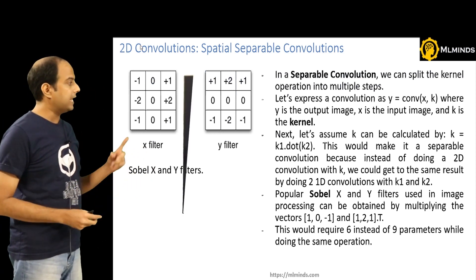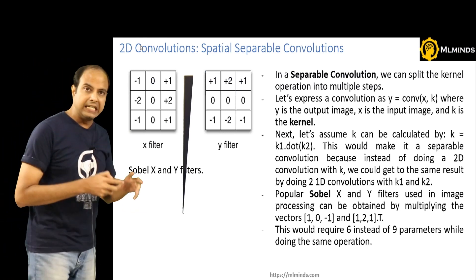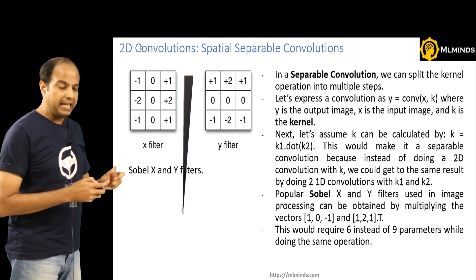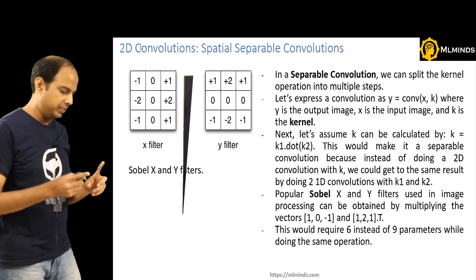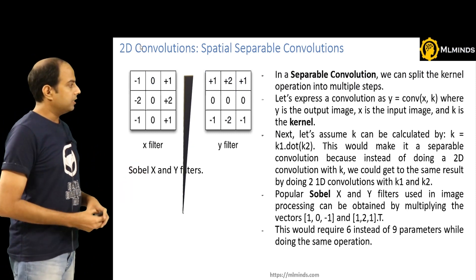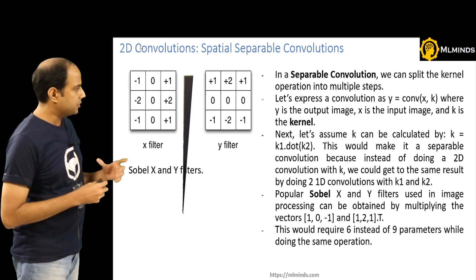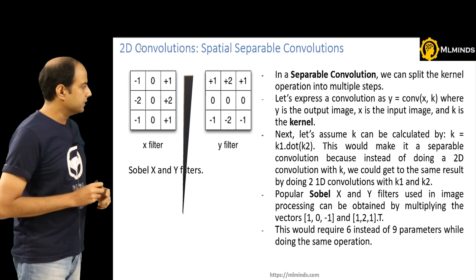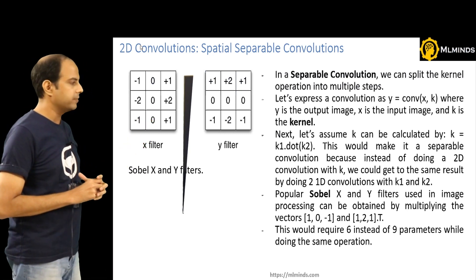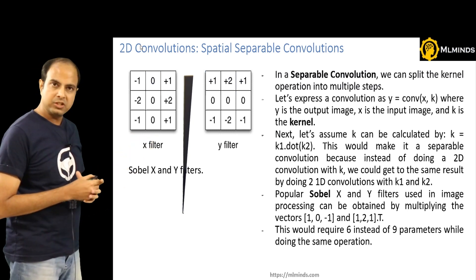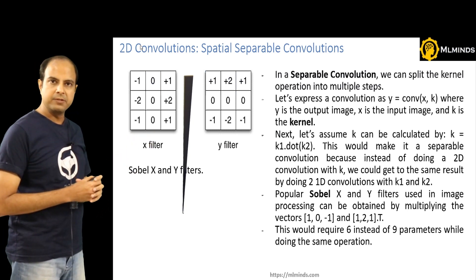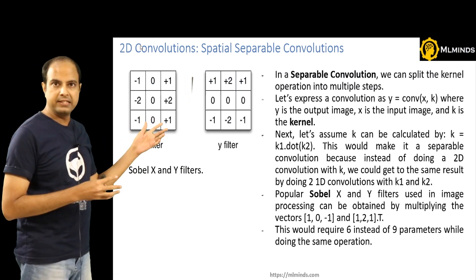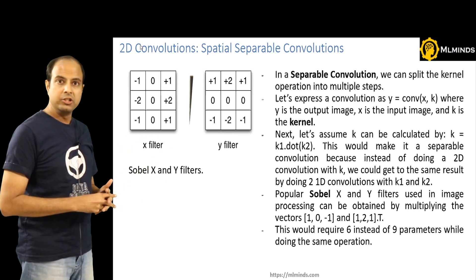The idea is that the kernel k can actually be split into two vectors k1 and k2, so that k = k1 · k2. k1 and k2 are vectors while k is a matrix — matrix-vector multiplication gives you the matrix back. This makes it a separable convolution: instead of doing a 2D convolution with k, you get the same result by doing two 1D convolutions one after the other. The popular Sobel X and Y filters can be obtained by taking vectors like [1, 0, −1] and [1, 2, 1]ᵀ and multiplying them.